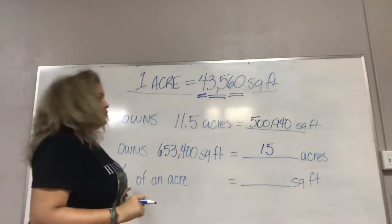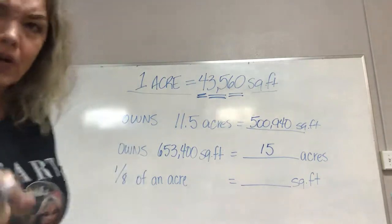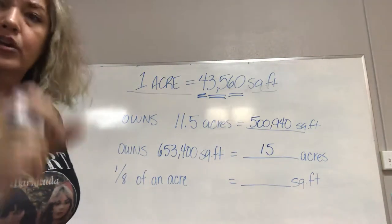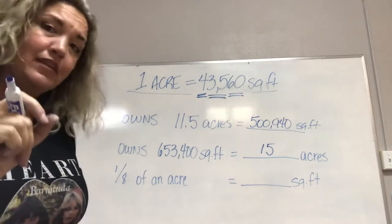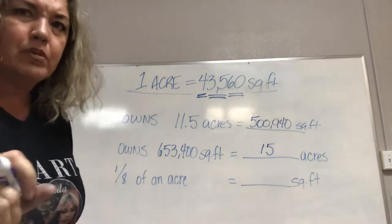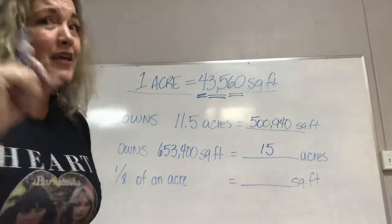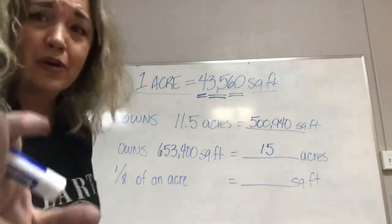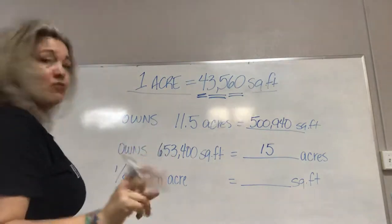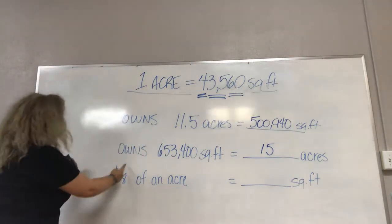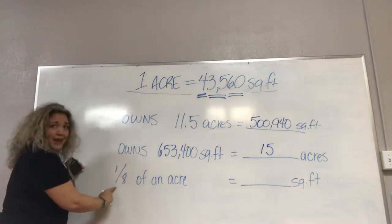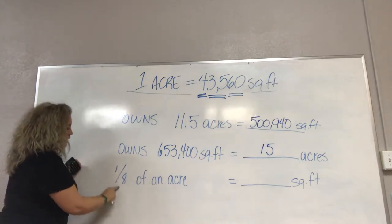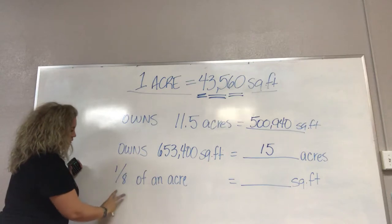Now, ooh, what if they tell us, hey, the farmer owns an eighth of an acre, or your buyer just bought an eighth of an acre? Oh crap, they used a fraction. But they don't know us at Real Estate Business School of Salado already knows what to do with that fraction. Remember, this line here between the one and the eight means to divide.